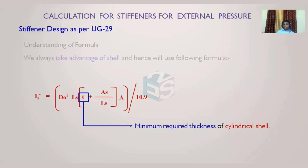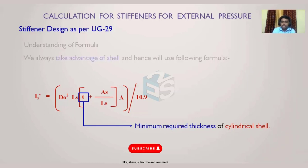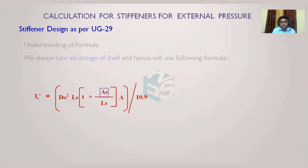The variable t is the minimum required thickness of the cylindrical shell for external pressure. Since this is an iterative method, we start with the thickness selected for internal pressure. For example, if 10 mm nominal thickness was chosen for internal pressure, then 10 mm minus the corrosion allowance is the thickness t to be used in the external pressure and stiffener ring calculations.